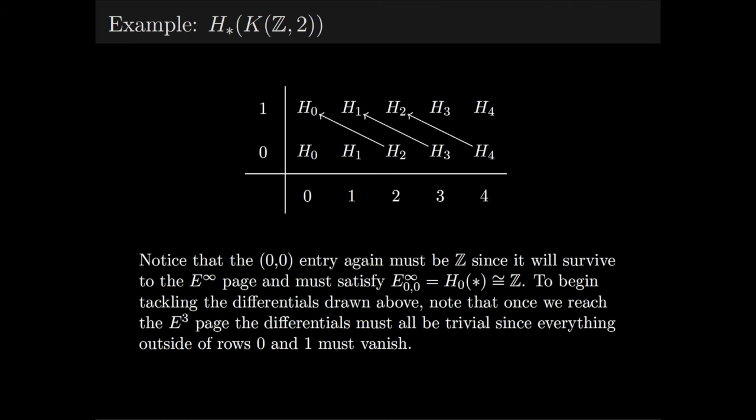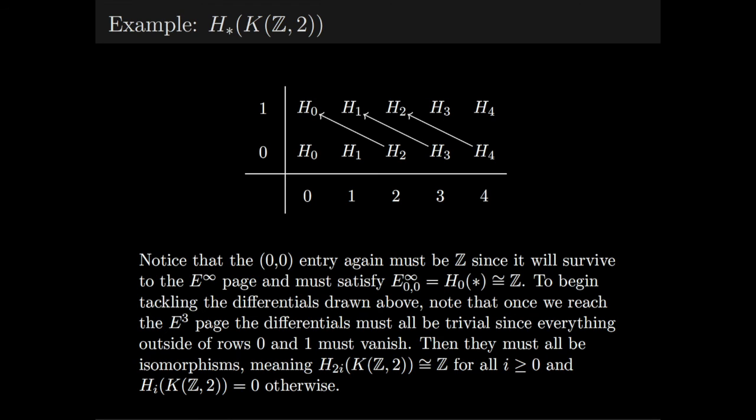To begin tackling the differentials drawn above, notice that once we reach the E³ page, the differentials must all be trivial since everything outside of rows 0 and 1 must vanish. Then they must all be isomorphisms, meaning H_{2i} of K(Z,2) is Z for all i greater than or equal to 0, and vanishes otherwise. We could have also used the fact that CP^∞ is a K(Z,2) and then just used the normal computation for the homology of complex projective space, but this gives a different way of finding that homology.